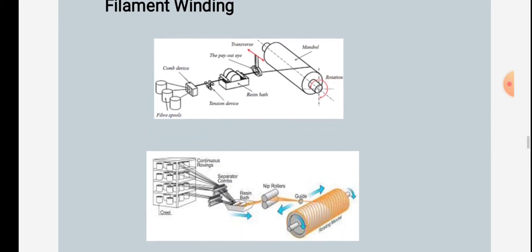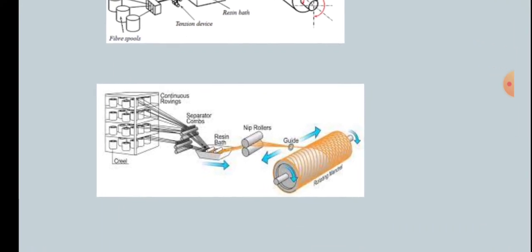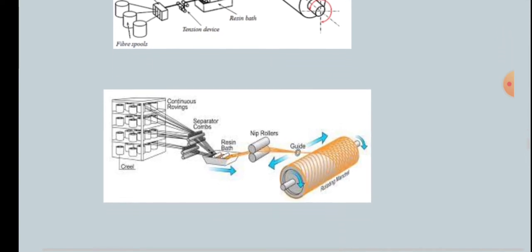Filament winding is shown in the figure. The figure shows fiber spools, a drive device, tension device, payout eye, resin bath, and mandrel rotation. Also shown are the creel, continuous roving separator, corridors, resin bath, nip rollers, and rotating mandrel.